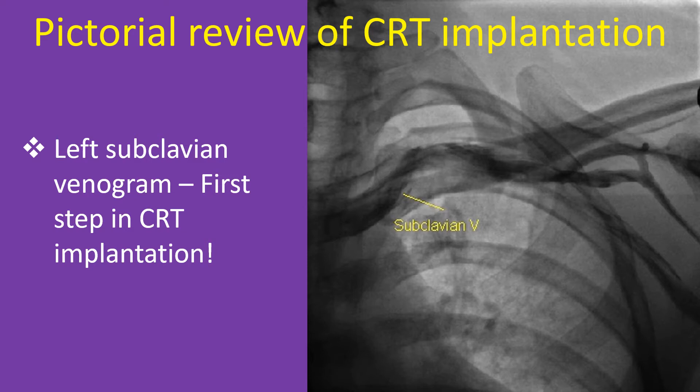Extrathoracic subclavian axillary vein puncture is very much facilitated by the venogram roadmap. Intrathoracic puncture is discouraged because of the chance of subclavian crush and long-term damage to the pacing leads. Intrathoracic subclavian puncture also carries a risk of pneumothorax as an occasional complication. The venogram is also useful to exclude anomalies and occlusion of the venous system prior to puncture. If the veins are not found to be suitable, the procedure is switched to the opposite side.